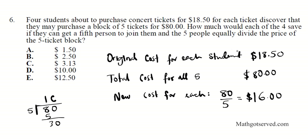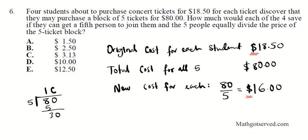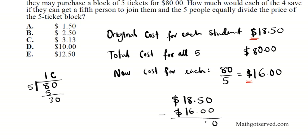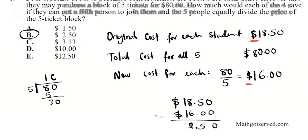So this is the new cost. This is the original cost. So what I'm going to do is I'm going to look for the difference between the original cost and the new cost. And that's the savings that each of the 5 will have. So we're going to go $18.50 minus $16. And you subtract it. So it's $2.50. Your answer is B. Each person will save $2.50.